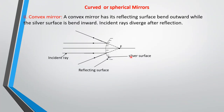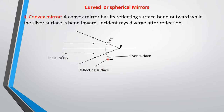For convex mirrors, the reflecting surface is bent outward while the silver side is bent inward. Incident rays falling on the reflecting surface will all diverge after reflection. So these are the shapes of the two curved mirrors that we have — concave and convex mirrors.